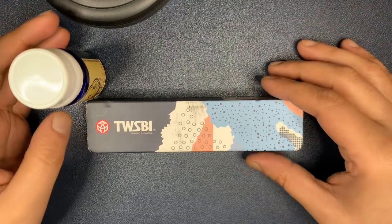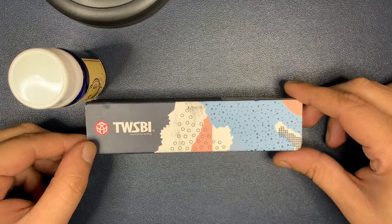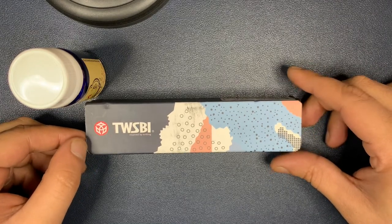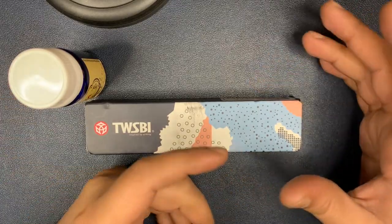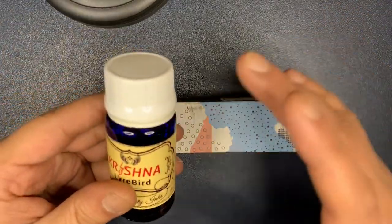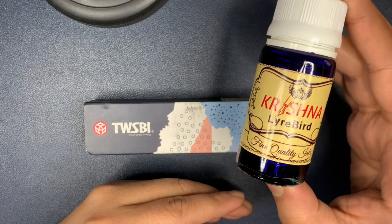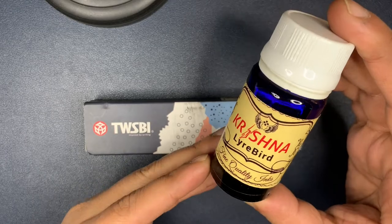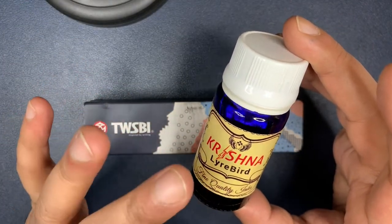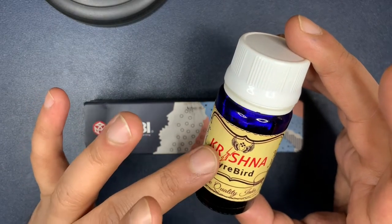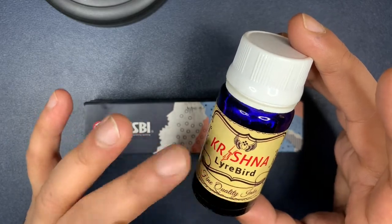So I thought today we'll do the TWSBI line of pens. This particular one is called the TWSBI Swipe. It's the latest in the TWSBI lineup and a little bit about the ink that I'm using today. It's Krishna Lyrebird Blue. It's just blue. It doesn't say royal blue or anything of that sort, but it's a very nice blue. Quite saturated, fairly wet and a lovely color when it comes out, as you will see.